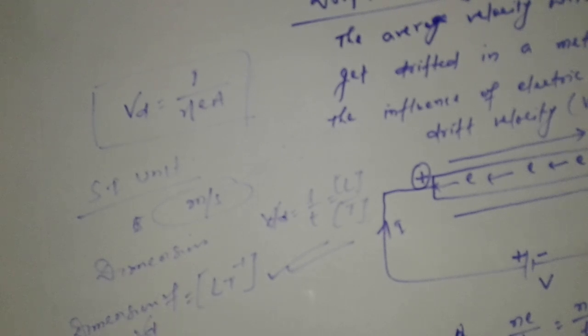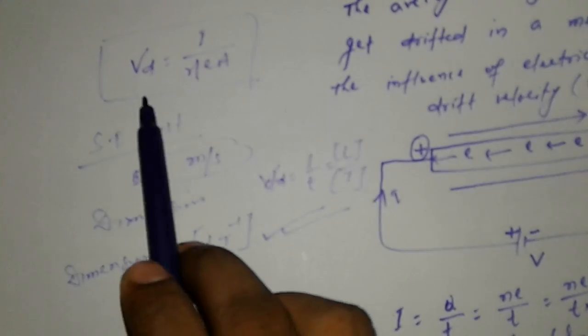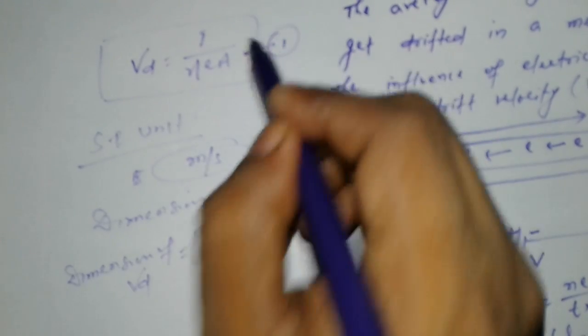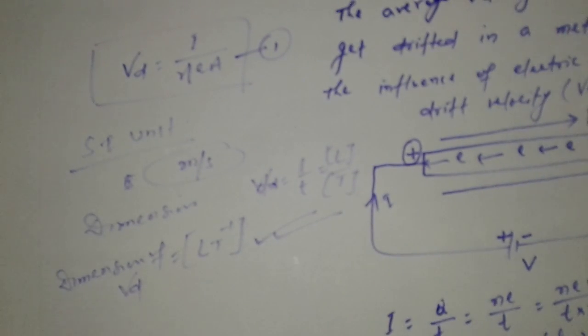The drift velocity formula: Vd is equal to I by eta e A. Thanks for watching this video. Okay, bye bye.